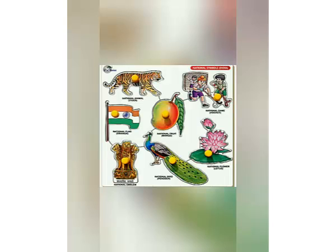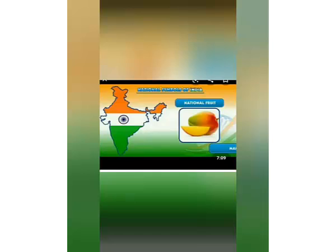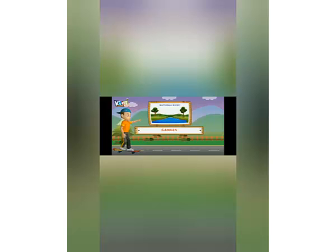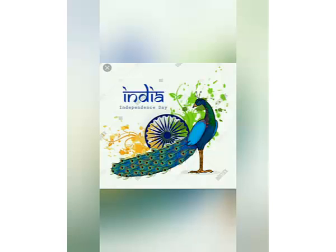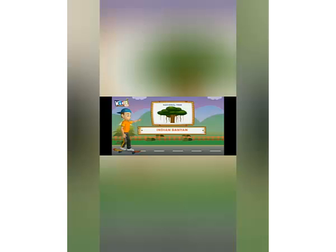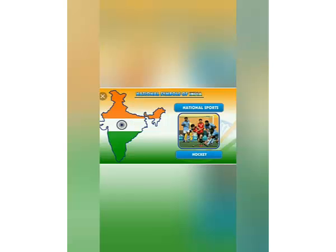Now I will tell you about national symbols of our country, India. Our national fruit is mango. Our national river is Ganga. Our national animal is tiger. Our national bird is peacock. Our national tree is banyan. Our national game is hockey.